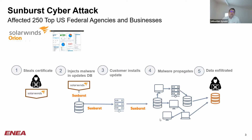The customers then installed the malware-infected update. It would stay quiet for a couple of weeks, so that in case the update is first tested in a controlled environment like a sandbox, no anomaly is detected. But then after a few weeks came the credential theft and propagation. Orion, being a network management tool, has access to many credentials in order to manage a large variety of network services. It can access all the accounts and passwords, making it very easy for the malware to gain privileges and replicate itself on various machines.